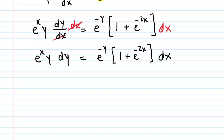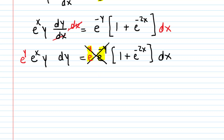Perhaps our next move would be to multiply both sides of this equation by e to the positive y, and we're going to talk about why that would be effective. If we do that, we would have e to the positive y times e to the negative y. We know that we would add those powers, so we end up with e to the power of 0, which is just 1 — so this term becomes 1 and cancels out. Similarly, we could multiply both sides by e to the negative x, because e to the positive x times e to the negative x also becomes e to the 0, which is just 1, so they effectively cancel out as well.